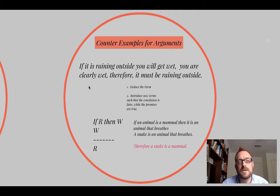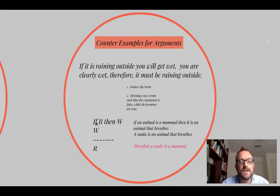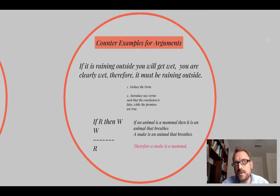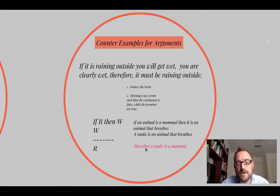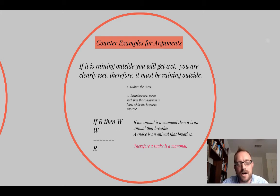Here's an example: if it's raining outside, then you'll get wet. You're clearly wet. Therefore, it must be raining outside. The form is: if R, then W; you have W; therefore you must have R. Now here's a counterexample with the same structure: if an animal is a mammal, then it is an animal that breathes. A snake is an animal that breathes. Therefore, a snake is a mammal. Notice it has the same structural reversion — the consequence makes you want to conclude the antecedent is the case. You can actually construct counterexamples for whole arguments.